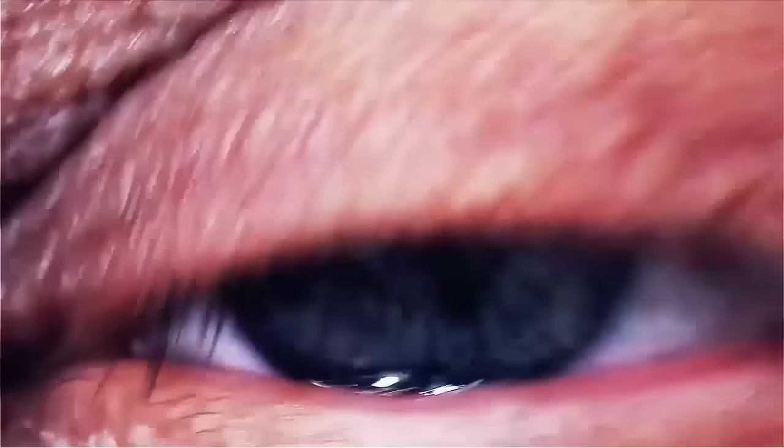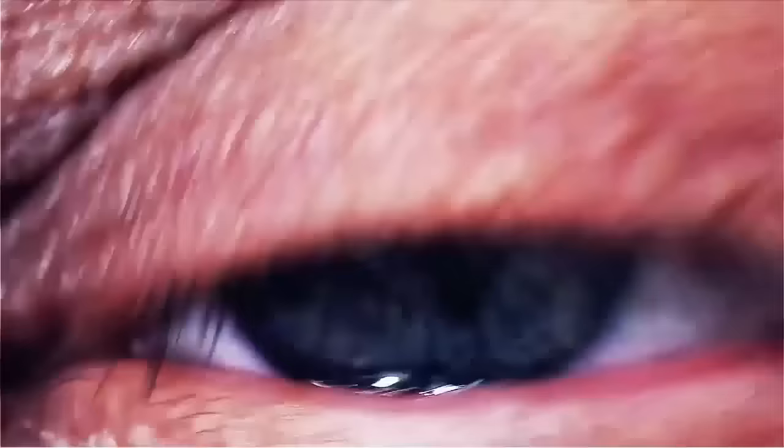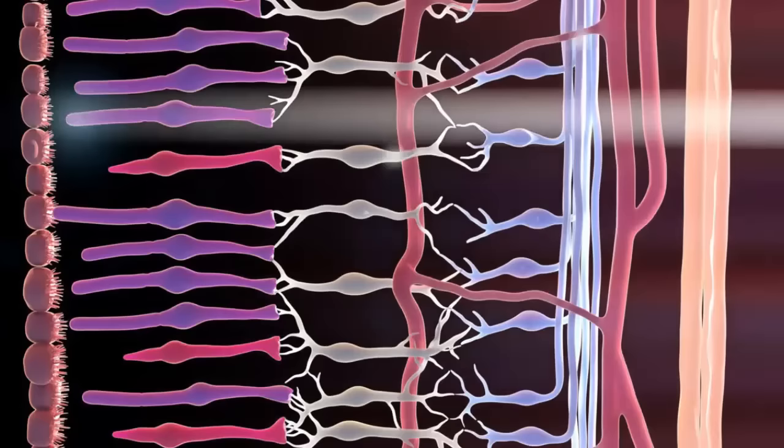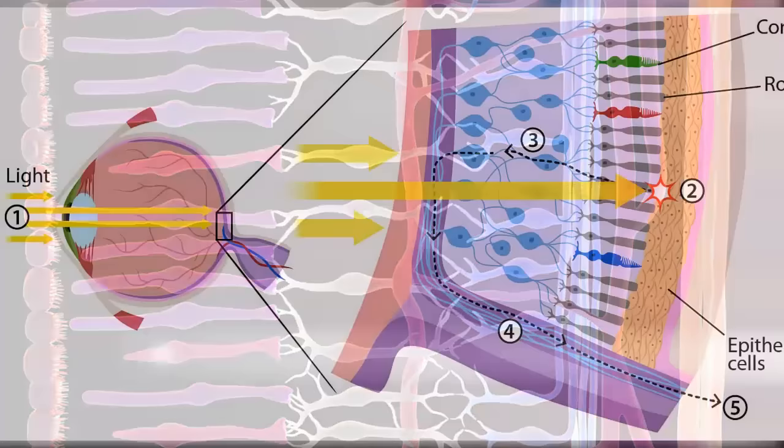The biggest difference between human vision and cat vision is the retina, a layer of tissue at the back of the eye that contains cells called photoreceptors. The photoreceptors convert light rays into electrical signals, which are processed by nerve cells, sent straight to the brain, and translated into the images we see. The two types of photoreceptor cells are known as rods and cones.